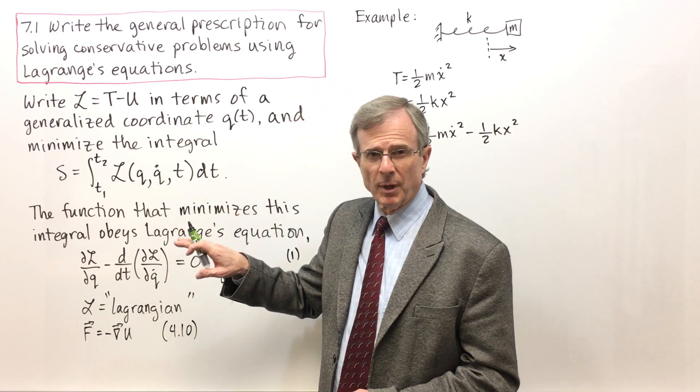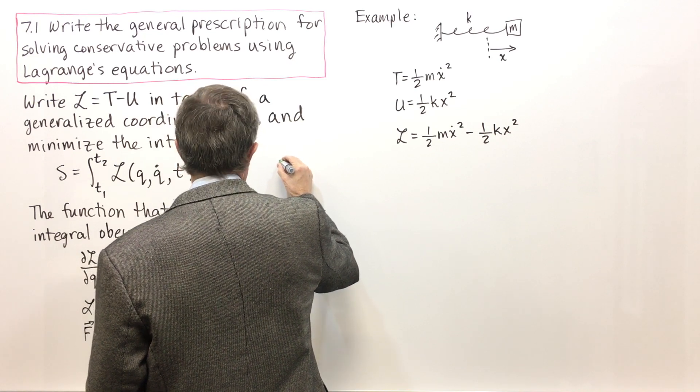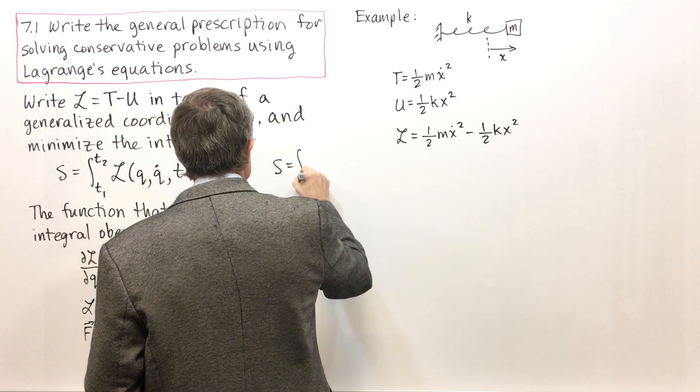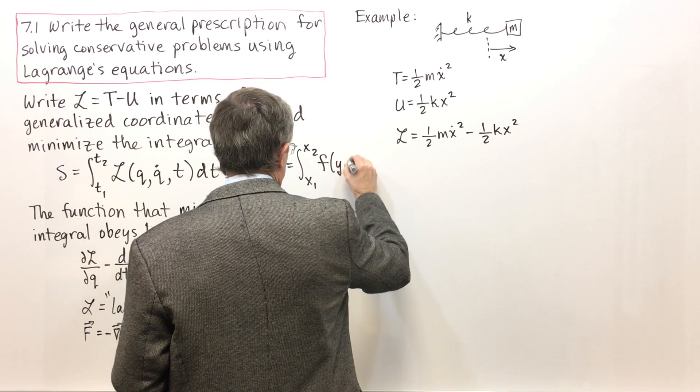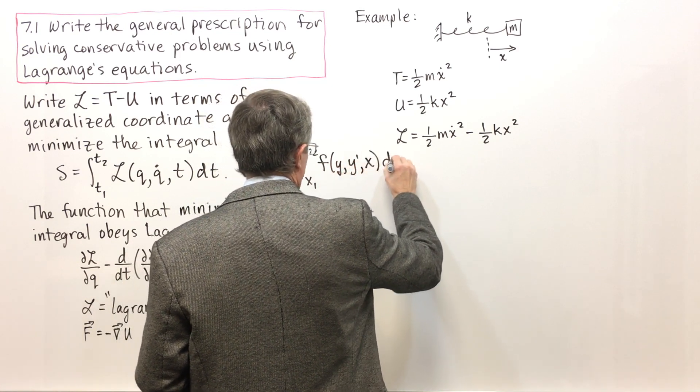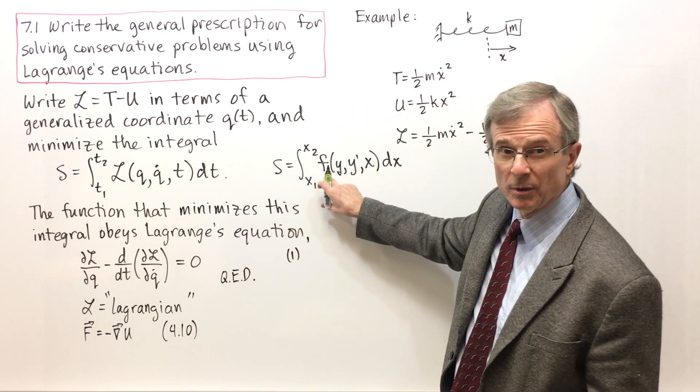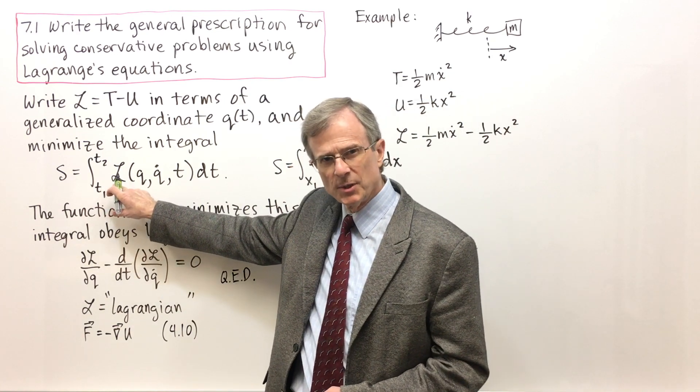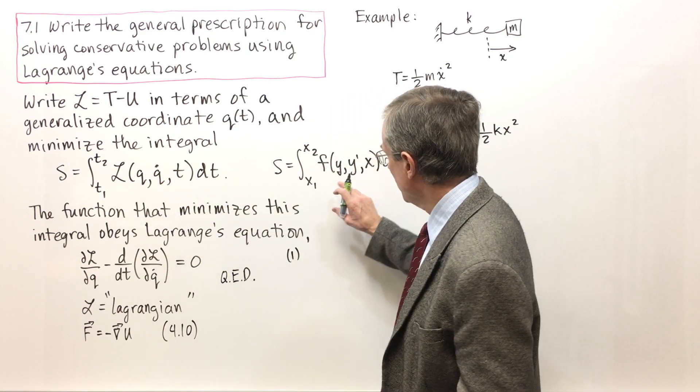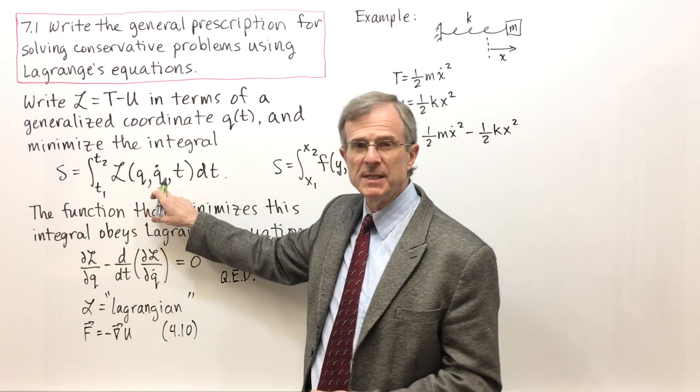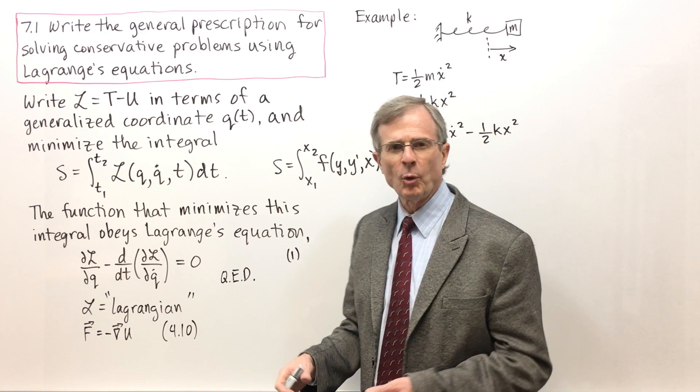This becomes a Calculus of Variations problem. It looks just like the one that we had in Concept 6.1, that S is integral X1 to X2 of F of Y, Y' and X dx. So comparing these two, the functional F is replaced by the Lagrangian, which now has some physics behind it. Y is replaced by Q. Y' is dy by dx is replaced by dq dt, Q dot, and then T is the other variable.